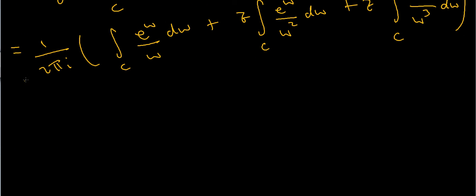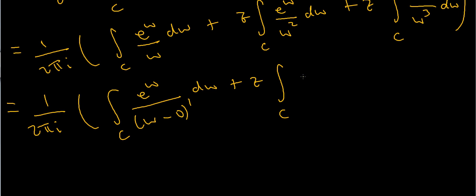Just to make it abundantly clear how I can apply it, I'm going to write my integral in a slightly different way. This is equal to 1 over 2 pi i times the integral over C of e to the w all over w minus 0 to the 1 power, dw, plus z times the integral over C of e to the w over w minus 0 all squared, dw,